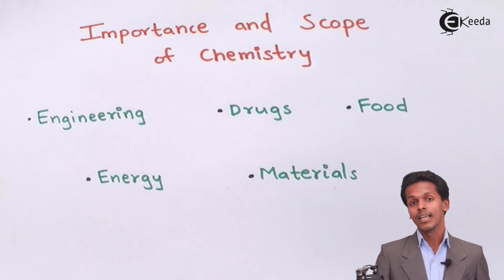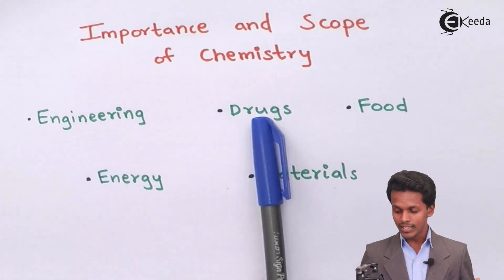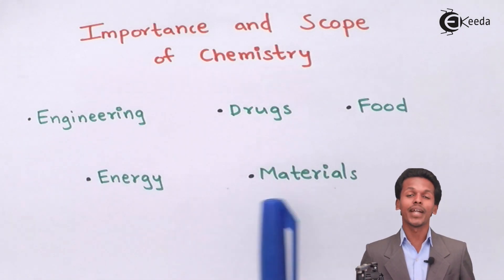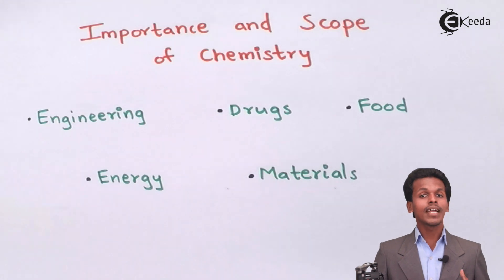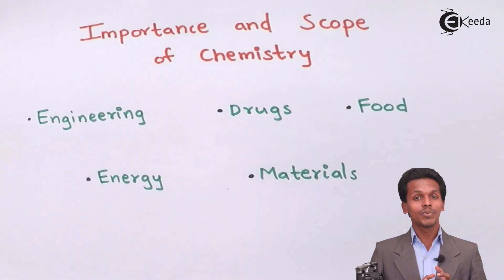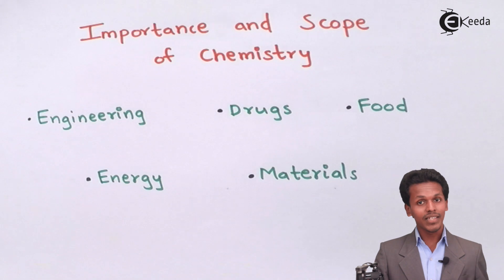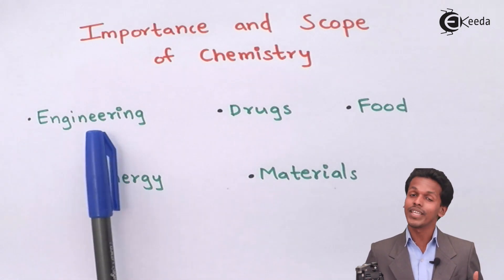or fields like engineering, drugs, food, energy, and materials. In engineering or in every topic, chemistry has influenced and is a very advanced and wide subject to understand, so as to create new kinds of science. Let us see what happens when chemistry is involved in engineering.